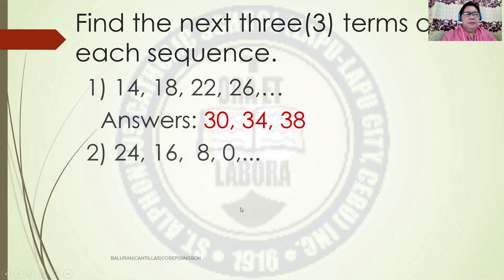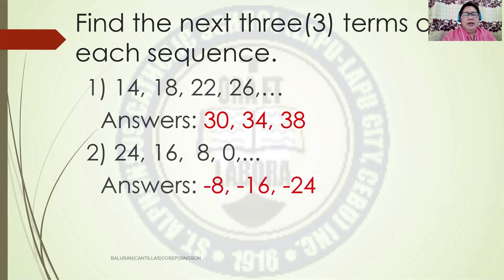Given the terms of the sequence 24, 16, 8, and 0 — what are the next 3 terms? The answers are negative 8, negative 16, negative 24. As you can see, this is a decreasing arithmetic sequence. 16 minus 24 gives negative 8, so the Common Difference is negative 8, and that is why the next 3 terms are negative 8, negative 16, and negative 24.